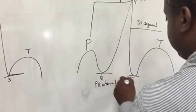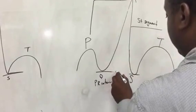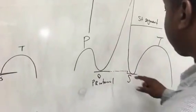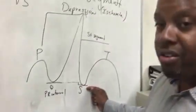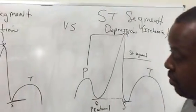So if we dot it over, we will see that it's actually lower. So we have ST segment depression, which is telling us myocardial ischemia.